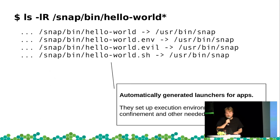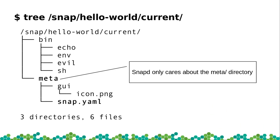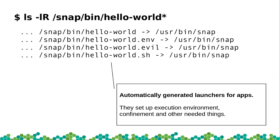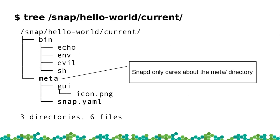Once installed, you don't want to figure out where everything is manually. When you install a snap, snapd gives you launchers, puts them on your path. They're just symlinks — we follow the symlinks, figure out what you want to do, and run them. It's not just going to run the binary directly; it looks at your snap.yaml and finds the command defined there.